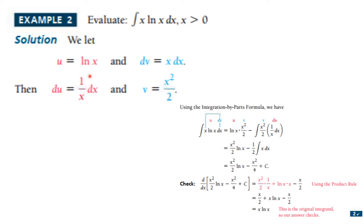Everything else has to be dv, so dv is x dx. We integrate this to find v, and we get v is x²/2. Again, the constant is zero. Now we use the Integration by Parts formula: the integral of u dv is equal to u times v minus the integral of v du.